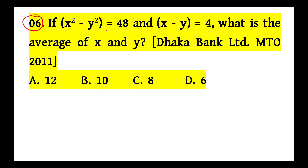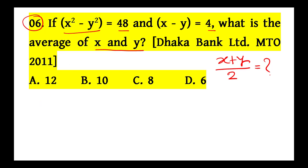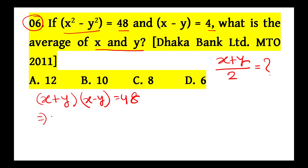So, if x squared minus y squared is 48 and x minus y is 4, what is the value of x plus y? That means x plus y is the average. x squared minus y squared equals x plus y into x minus y equals 48.